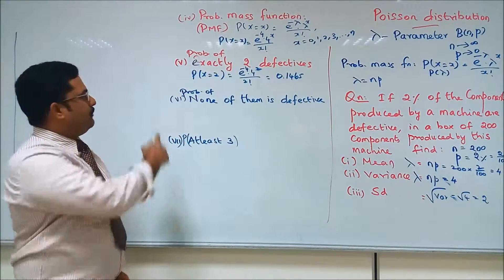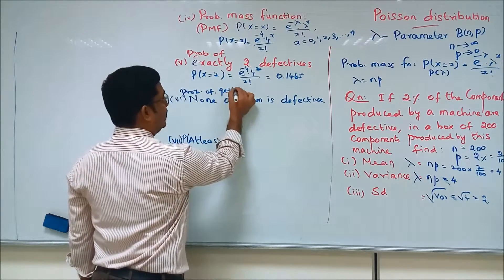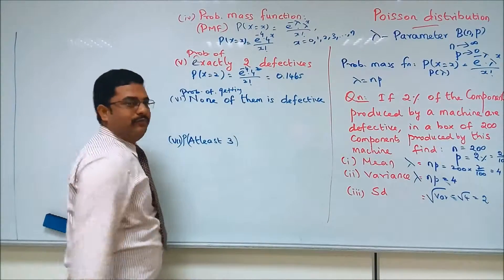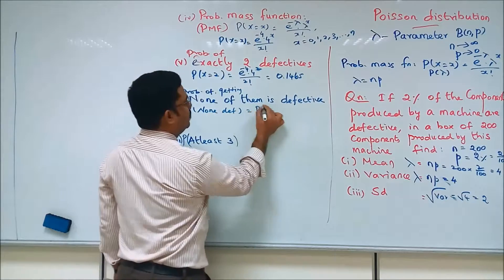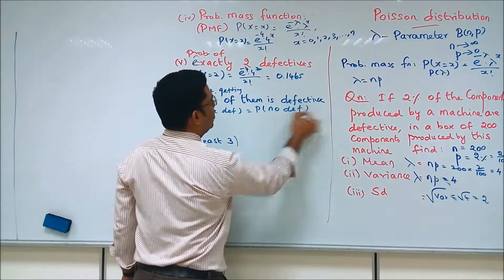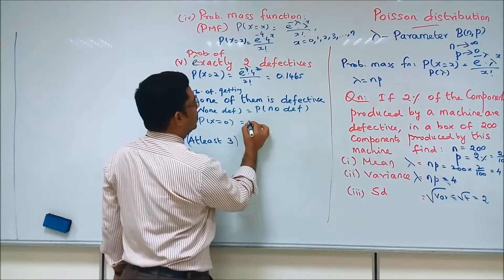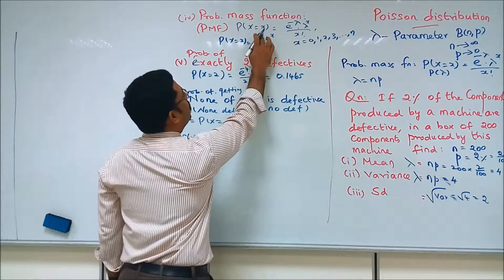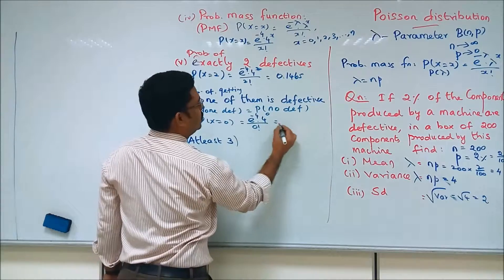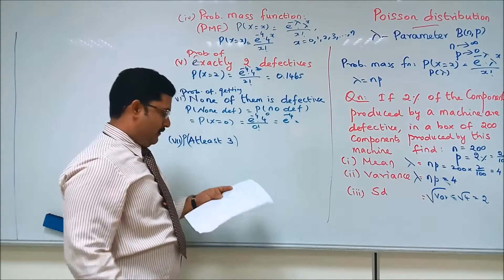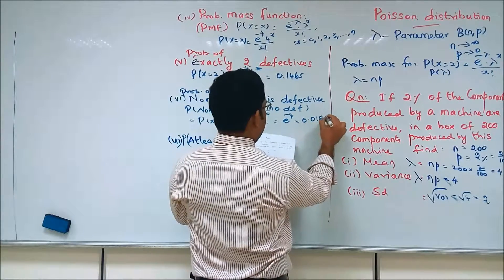The next one is to find the probability of getting none defective — that is, zero defectives — which is P(x = 0). Substituting x = 0, it is e to the power minus 4, times 4 power 0, divided by 0 factorial, which equals e to the power minus 4. The solution is 0.0183.